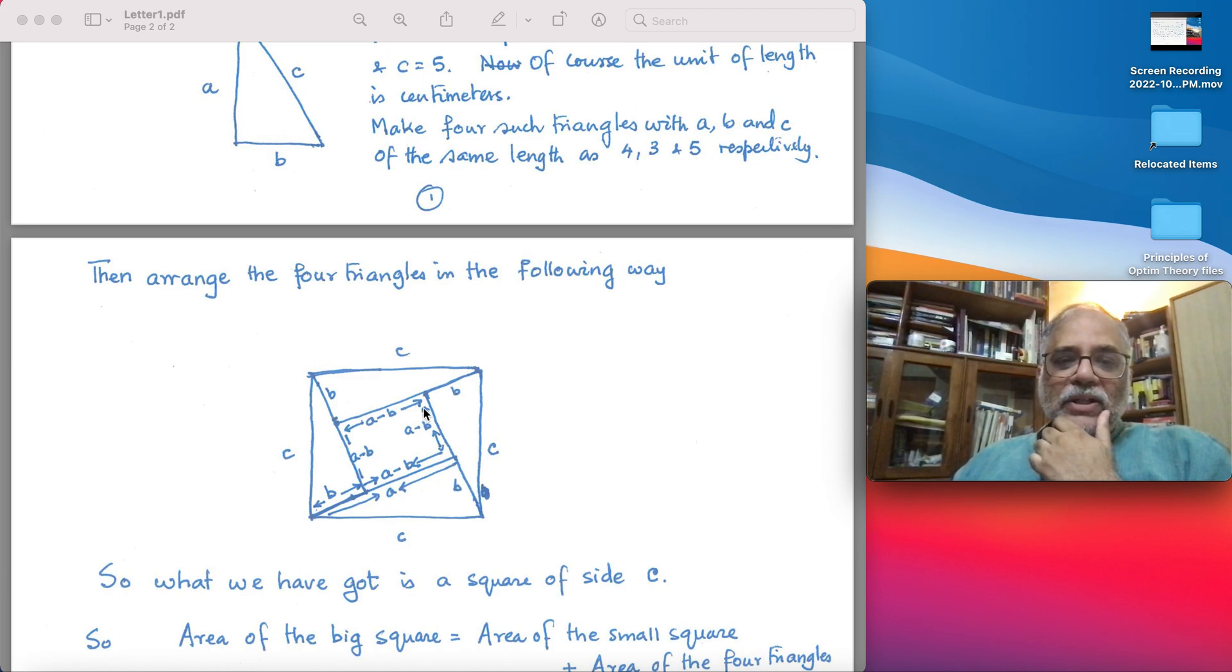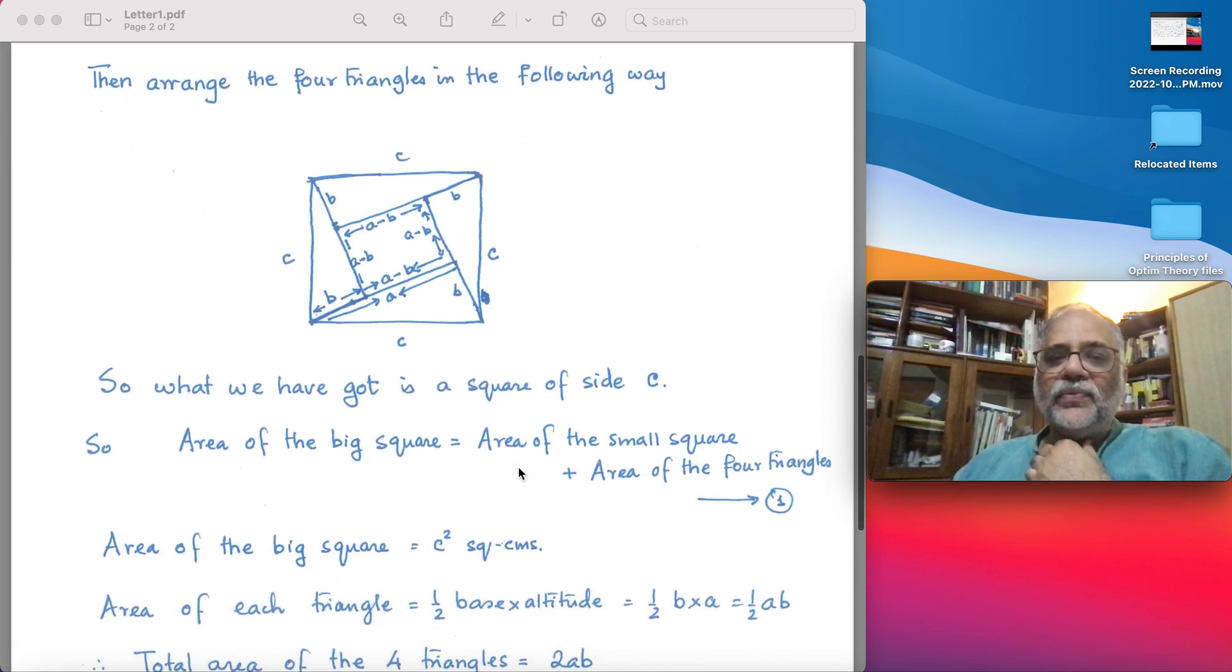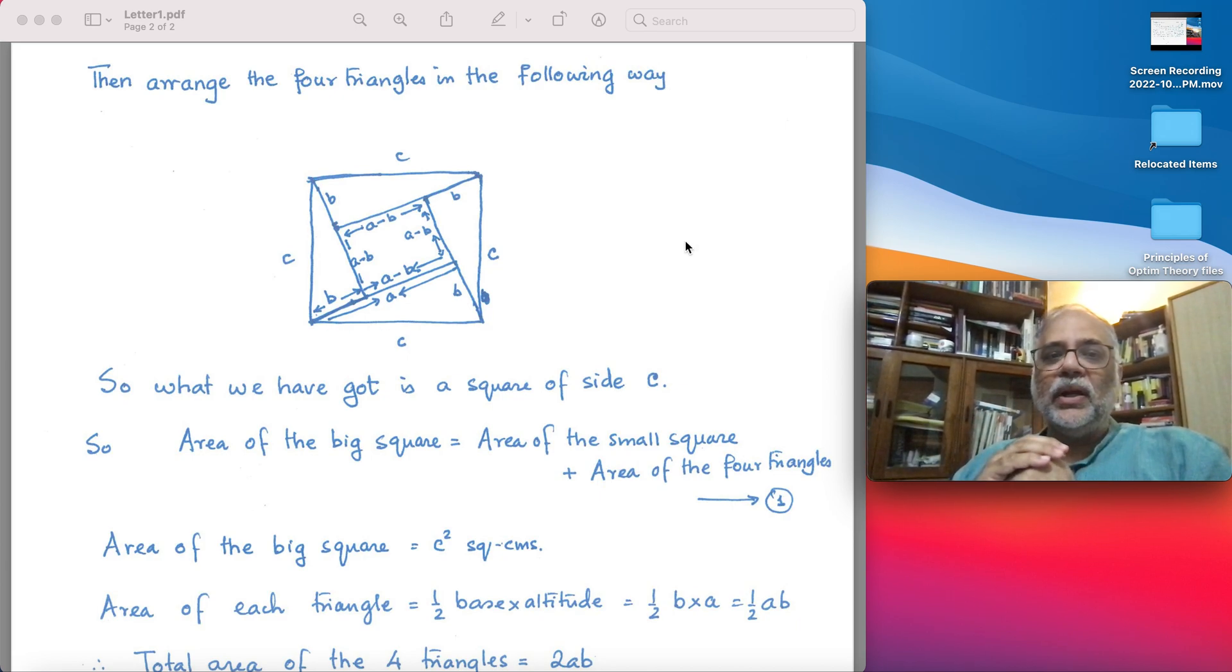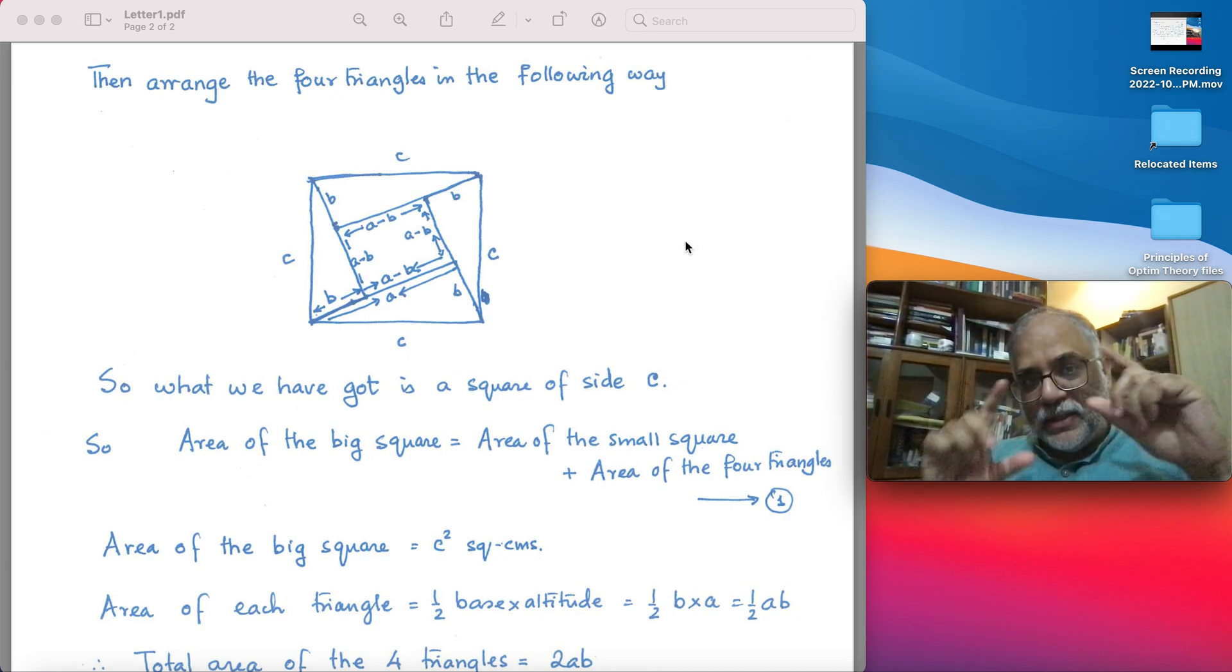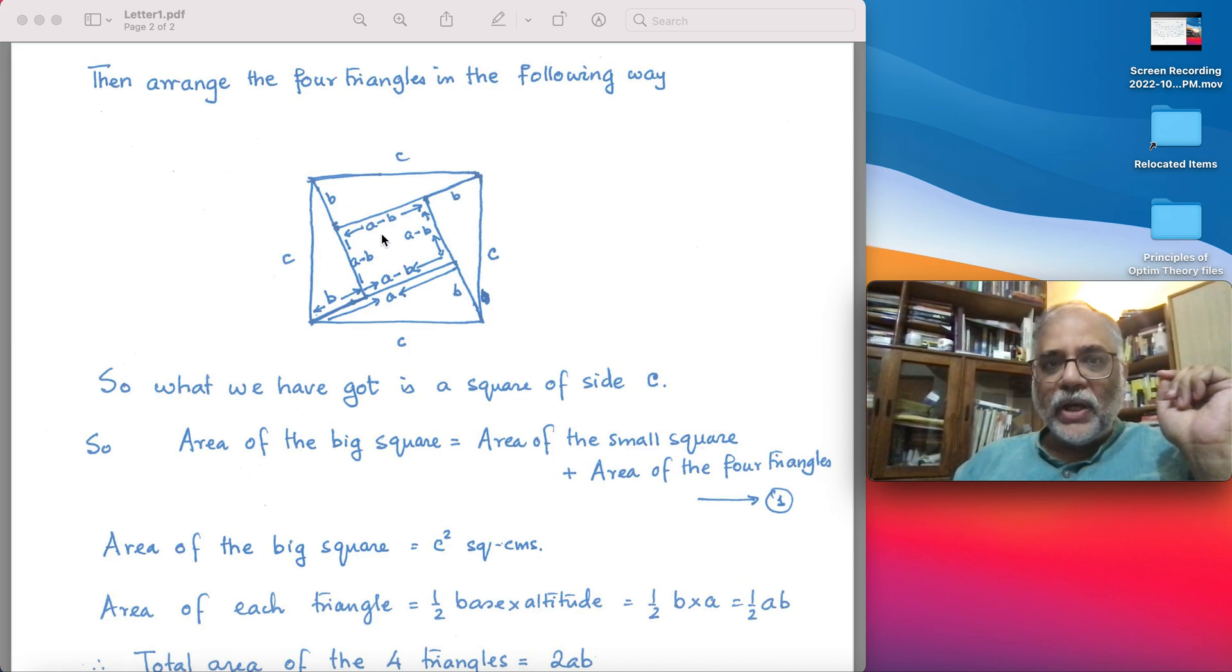You arrange it in such a way that you can observe from this arrangement that inside there is a square of length a minus b. I will just hold it here for a few minutes for you to observe this. What we have got is a square of side c, whose area is c², and whose area is equal to the sum of the areas of the four triangles plus the square inside.